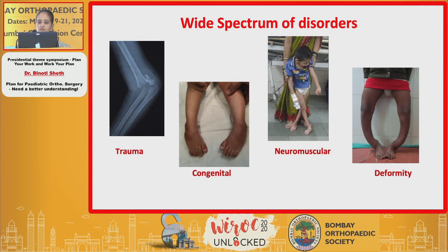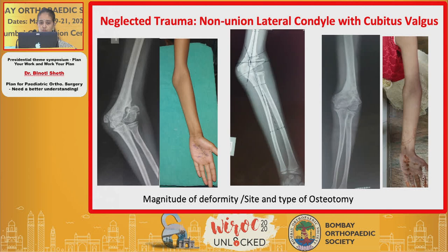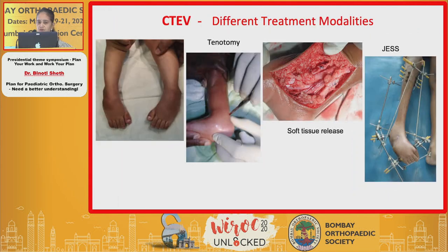Pediatric orthopedic surgeries include a wide spectrum of disorders. At one end you have acute trauma surgery like supracondylar humerus fracture, where you need to plan the correct technique of reduction, pin configuration, size, and direction. At the other end we have neglected trauma — a non-union lateral condyle fracture with cubitus valgus — requiring planning of deformity magnitude and osteotomy site. Congenital conditions like clubfoot have different treatment modalities. We deal with child surgery, but it's not a child's play.